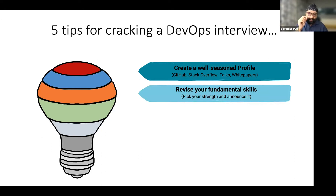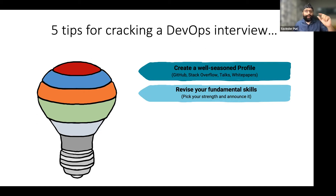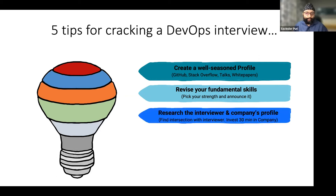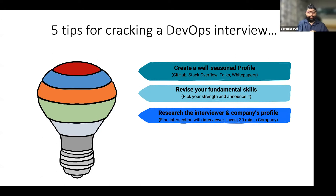Announce your strengths at the start of the interview. DevOps is a very large field, so it's important to tell the interviewer: 'From my understanding, you're looking for these five things — of these, these two or three are my core strengths.' Also, research the interviewer and the company's profile. I've taken thousands of interviews and you'd be surprised how many people don't even spend 30 minutes checking the company they're interviewing for. If possible, know who's interviewing you, check their LinkedIn, match your strengths to theirs so they ask questions you're comfortable with.